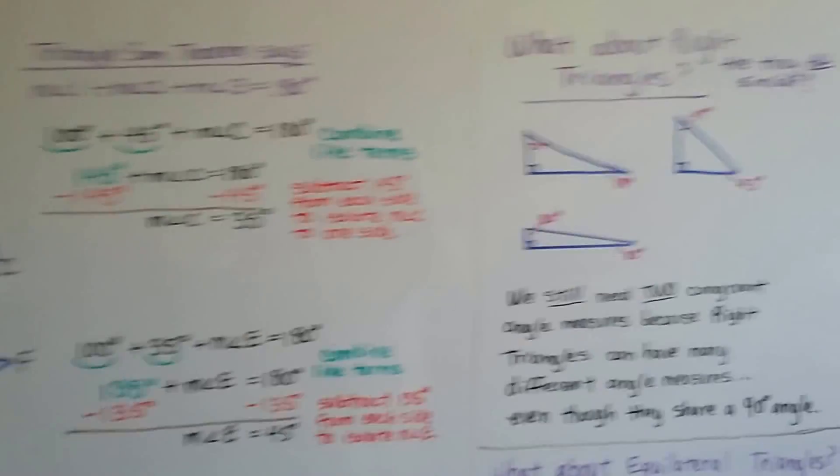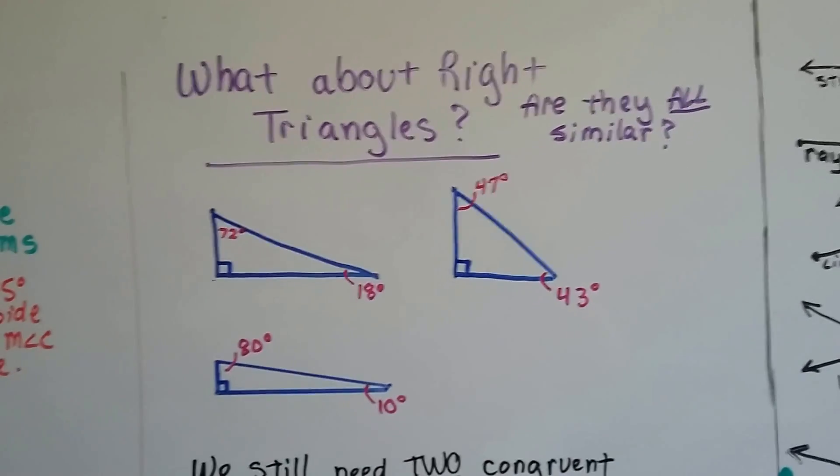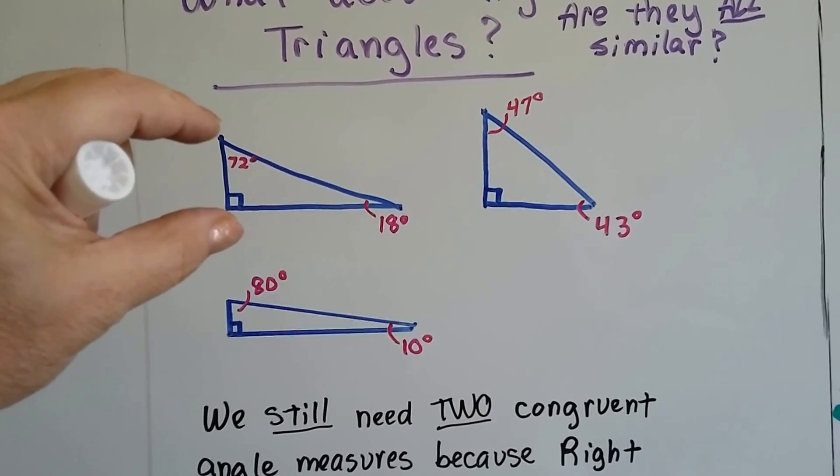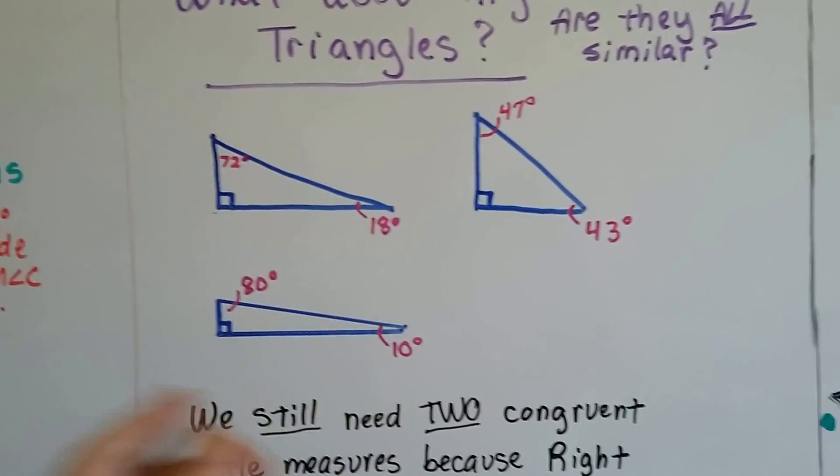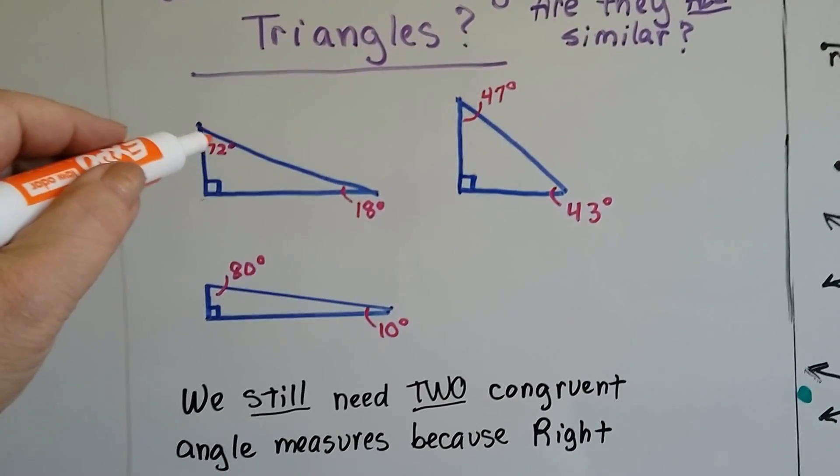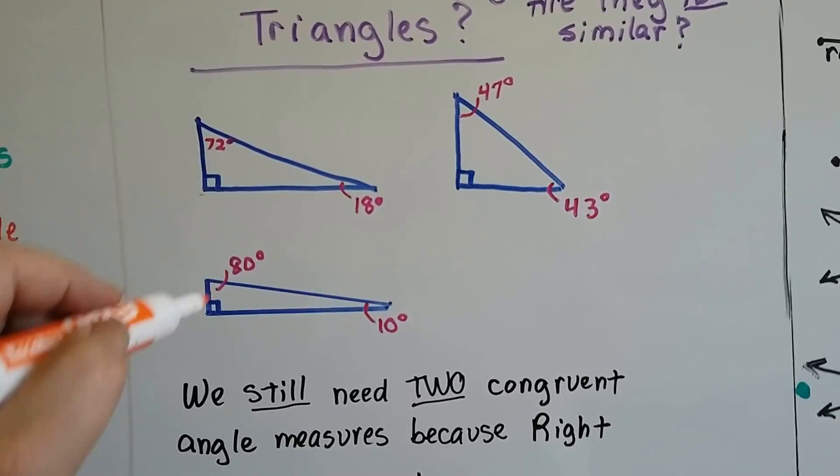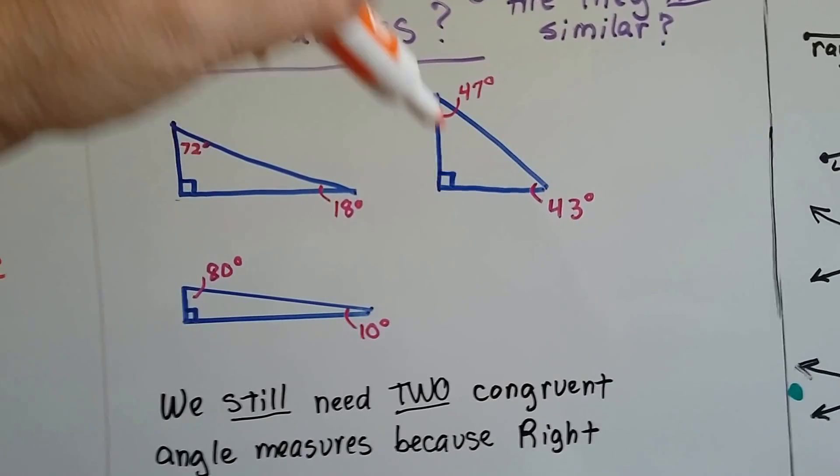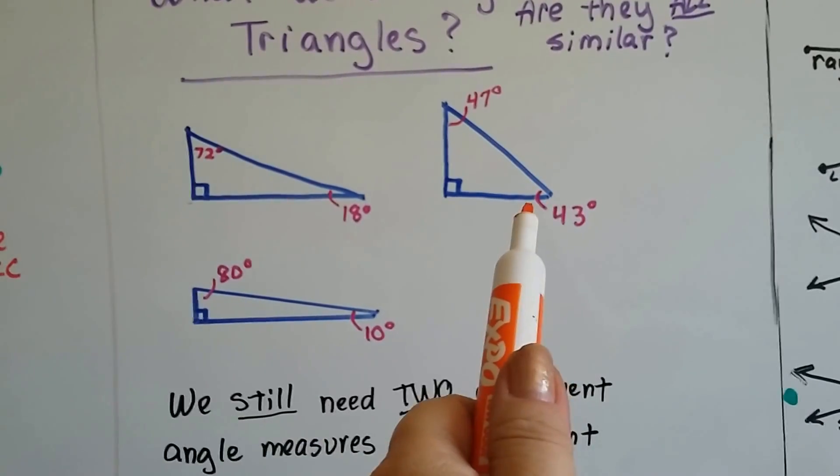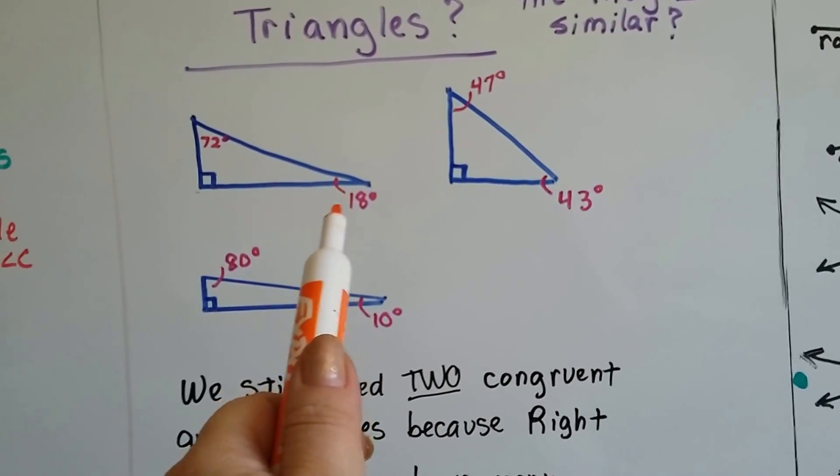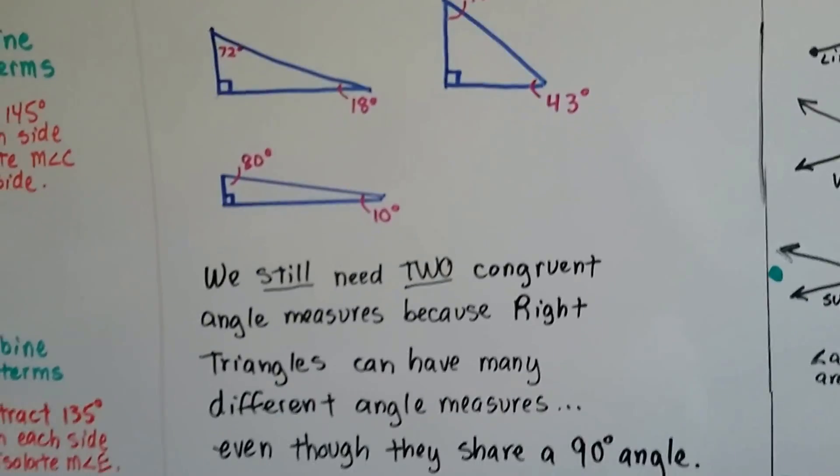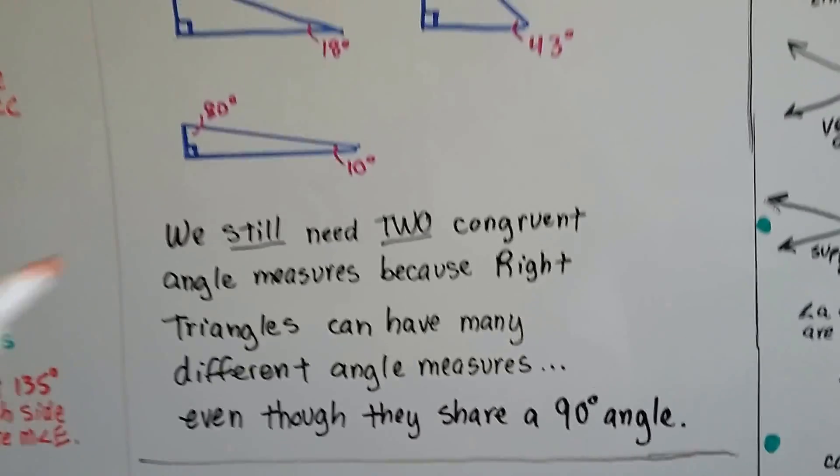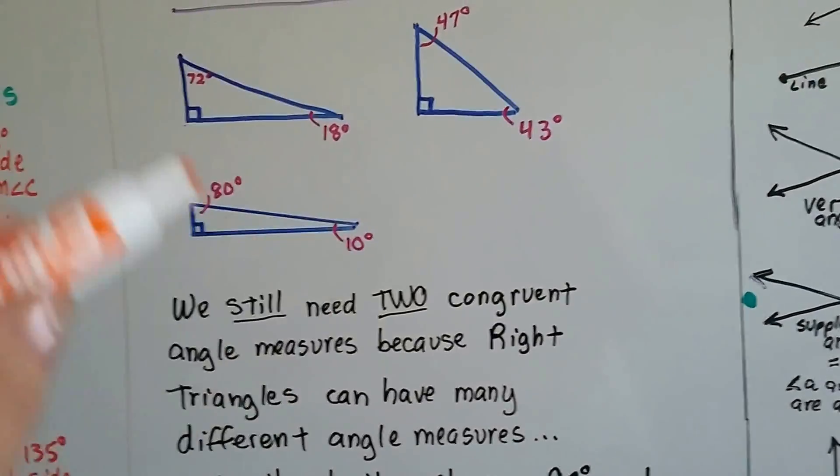Now, what about right triangles? Are they all similar? Look at these three that I drew. Depending on the height of this side and the length of this base, they could be all different measurements. This one has a 72 degree angle, but this one has an 80 degree because this is shorter and that is longer. This one has a 47 degree angle because it's taller here and shorter here. They're all different. So we still need two congruent angle measures because right triangles can have many different angle measures. Even though they share that 90 degree angle, the other angles could be all different.